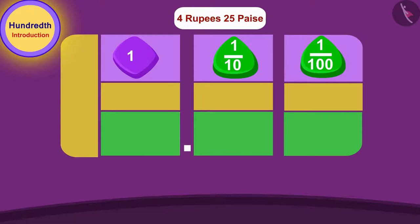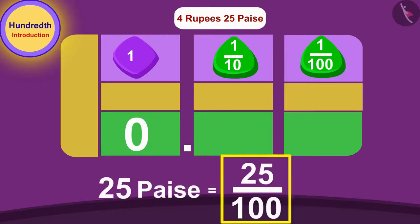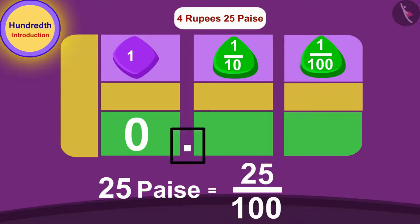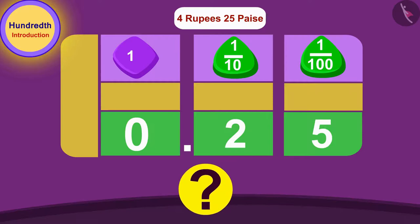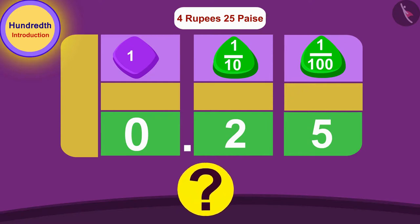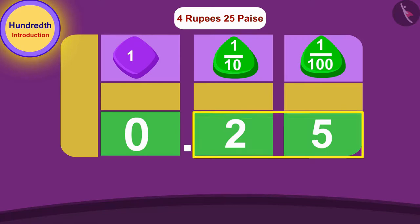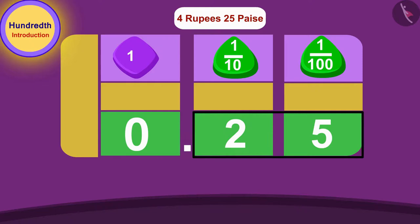So we will first draw a decimal point, then write zero before it, because twenty five hundredth is less than one whole. Since twenty five paise is twenty five hundredths of a rupee, we write the number twenty five after the decimal point. We always read the number written in the hundredths place by speaking its individual digits.